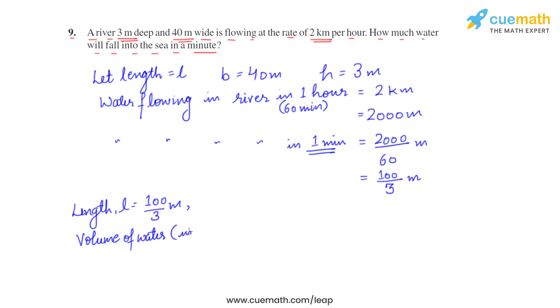When we find the volume, that will be the volume of water flowing into the sea in one minute. Volume of a cuboid is L × B × H, which equals 100 by 3 × 40 × 3. That comes out to be 4000 cubic meters.